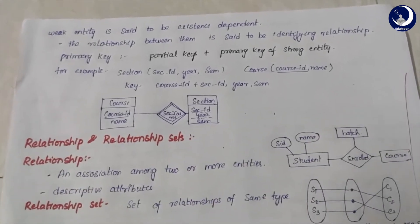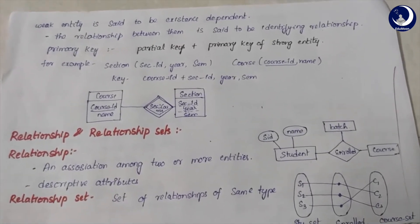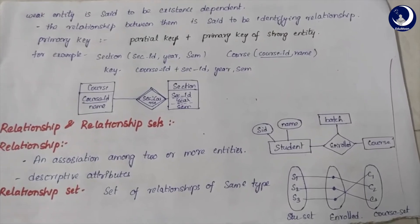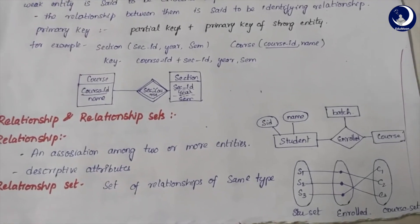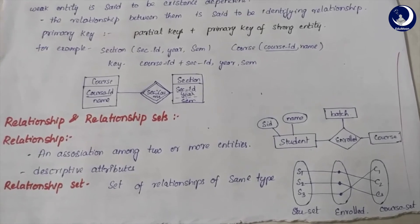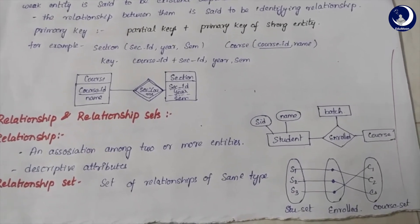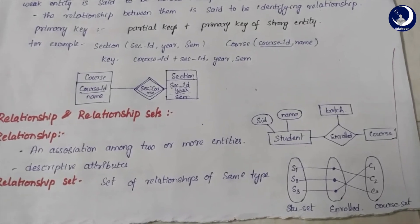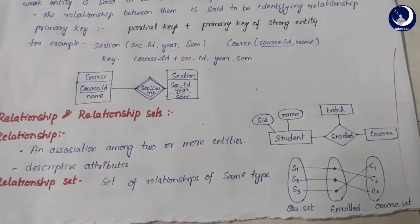A relationship is a basic association among two or more entities — it describes how entities relate to each other. For example, in a university database a student is enrolled in certain courses; here 'enrolled' is the relationship between student and course. We also have descriptive attributes — attributes that describe the relationship itself. For example, the batch year (2019, 2020 or 2021) of a student enrolled in a course is a descriptive attribute of that relationship.